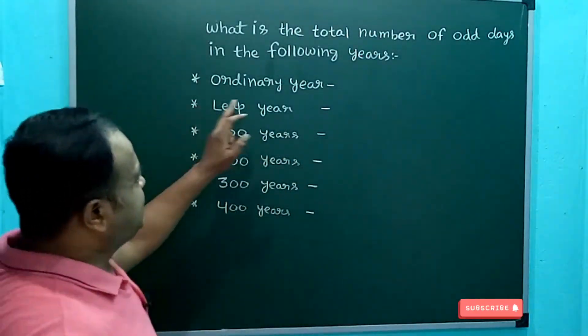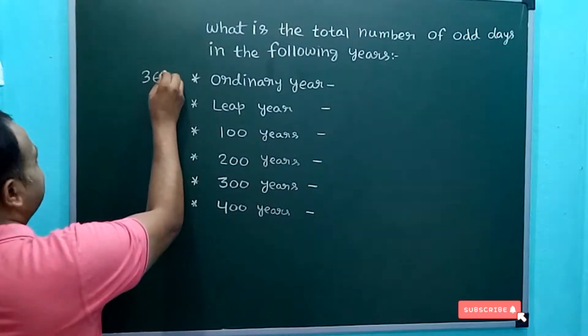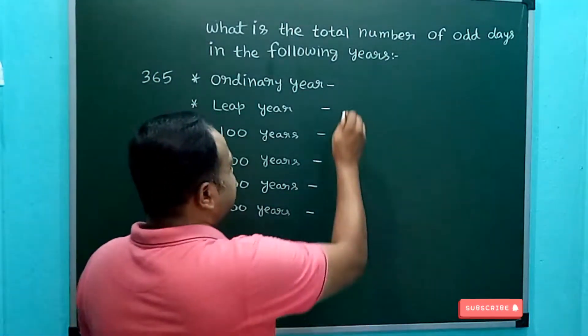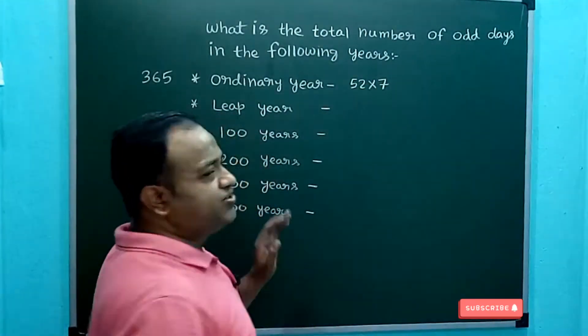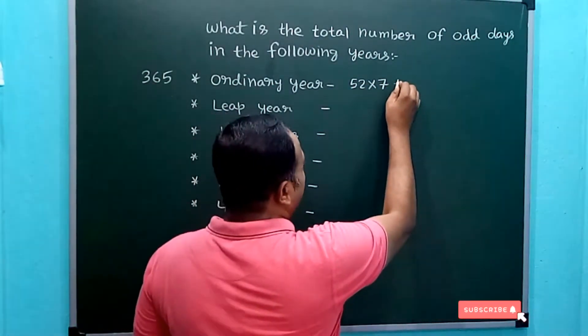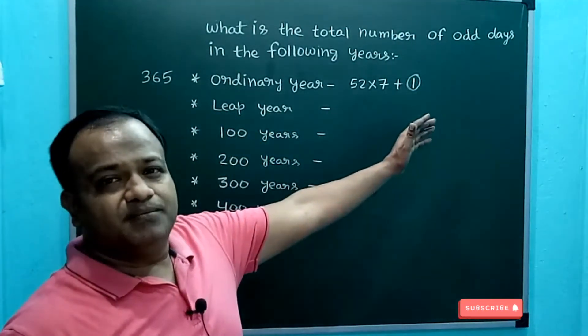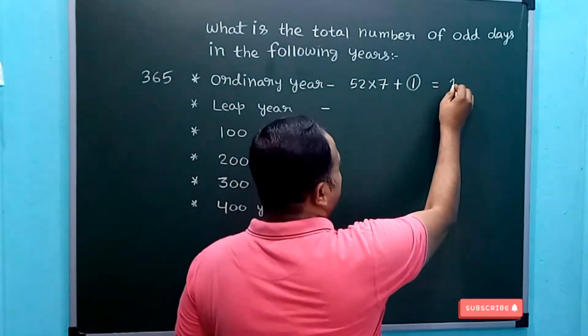Now let us understand that in an ordinary year there are 365 days. 365 days can be written as 52 × 7, that is 364 plus 1. Since 1 is not making any group of seven days, the odd number of days here is one.